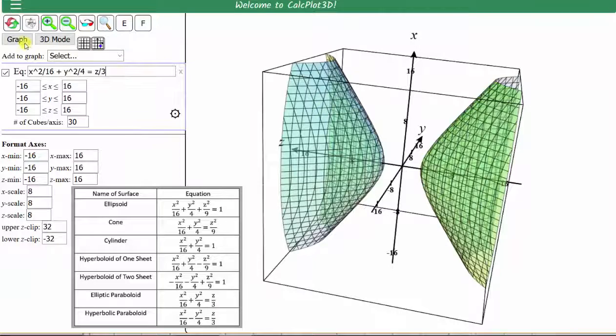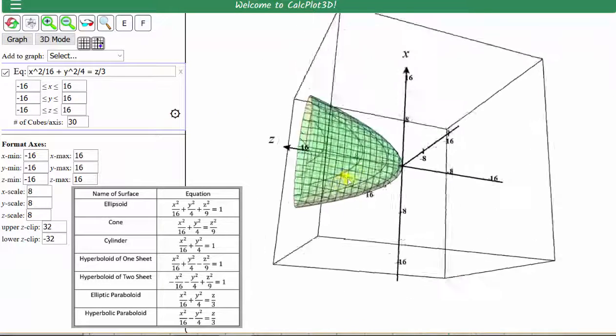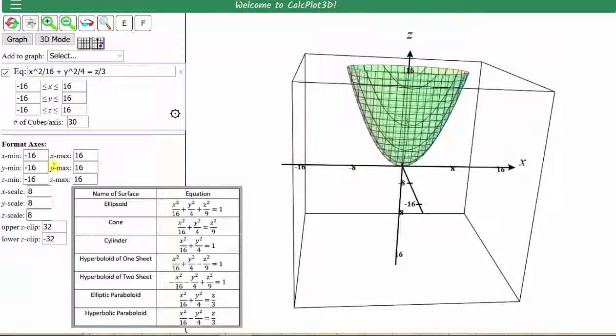We now have the correct equation. Click graph. And we have the elliptical paraboloid. Again, if we wanted to, we could adjust the axes manually down here at the bottom.